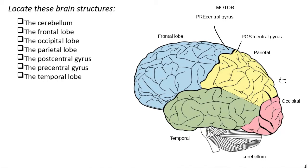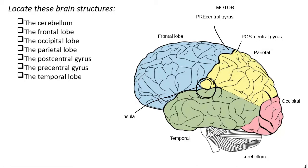Before moving on, there is one other lobe of the cerebrum that we can't see on the outside. If you dove deep underneath the lobes, right where all three of them meet, you'd also find a lobe hiding in the middle called the insula. The big thing to know about the insula, especially since we can't see it easily, is that it helps us with the process of taste.